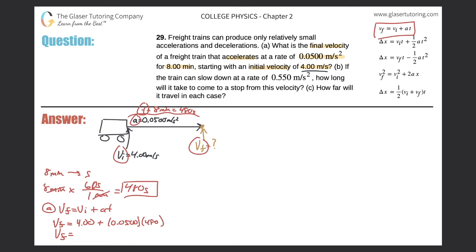So we've got 0.05 multiplied by 480. So 4.00 plus these values together. This number has three sig figs, this number is three sig figs. The 8 minutes given in the problem had three significant figures, so I should have really written 8.00, and the value should also have been 8.00. It won't make a difference in the math, but it will make a difference in significant figures, which may slightly change your answer depending on how particular your professor is.